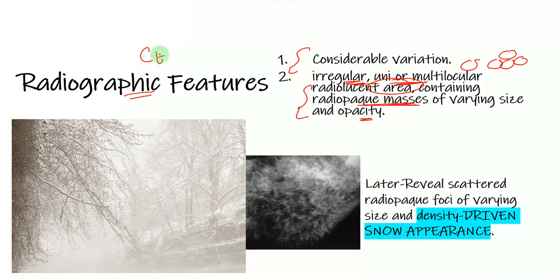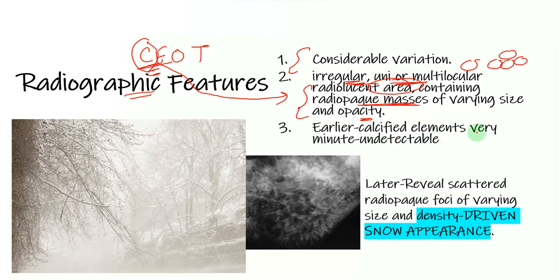As the name suggests, the calcifying part tells us that this radiolucency has the presence of certain calcifications. In the initial stages they're very minute, so they won't be detectable. But as time progresses, they become quite apparent, giving it the driven snow appearance.